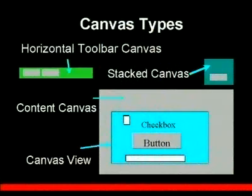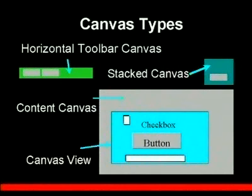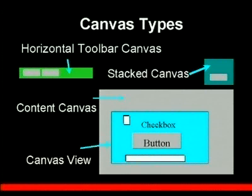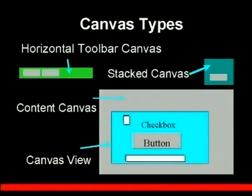Here is an overview of the different types of canvases. We have a horizontal toolbar canvas, which replaces the default icons you've seen when using runtime forms — you can create your own set of buttons as a toolbar canvas. We can also have a stacked canvas, which is stacked on top of the main canvas and can appear or disappear depending on how you control that. And the content canvas is the base canvas, with the canvas view being the visible piece of the canvas.